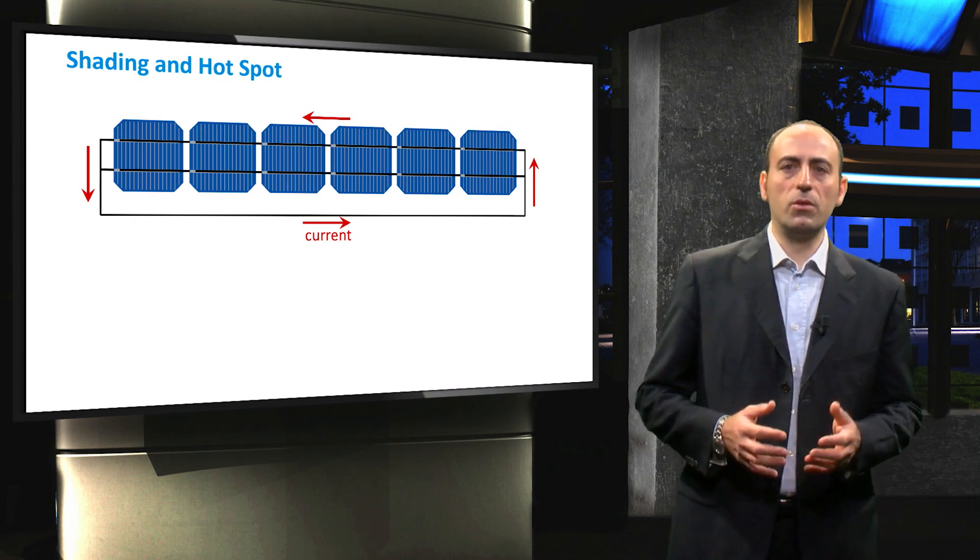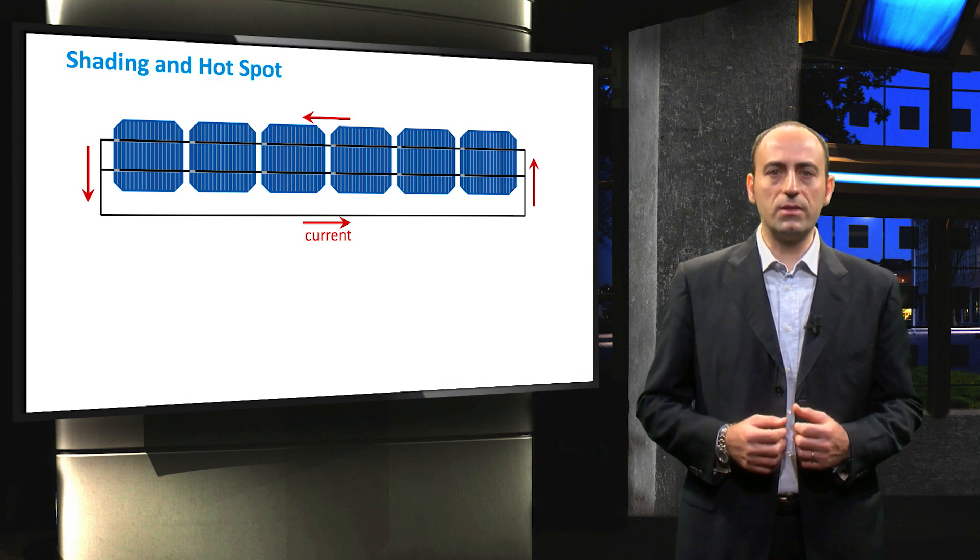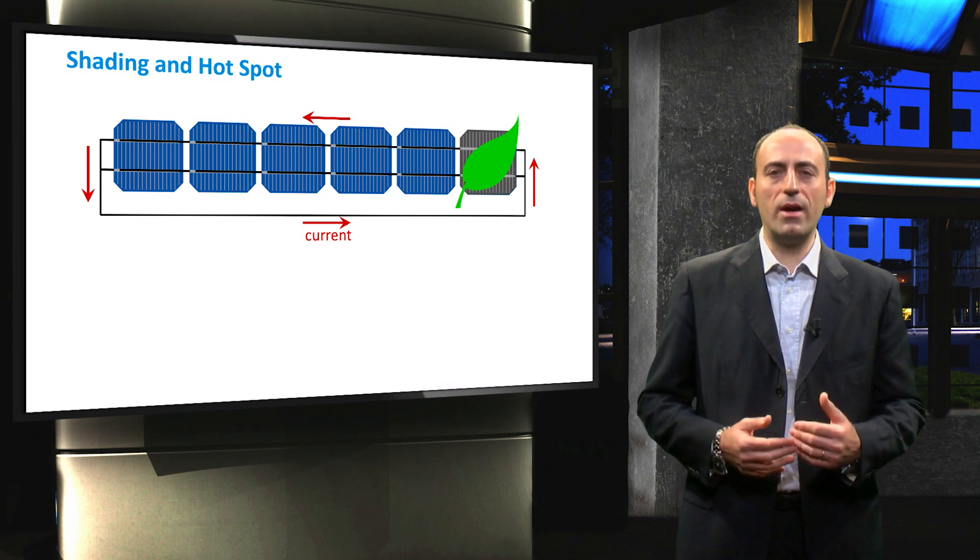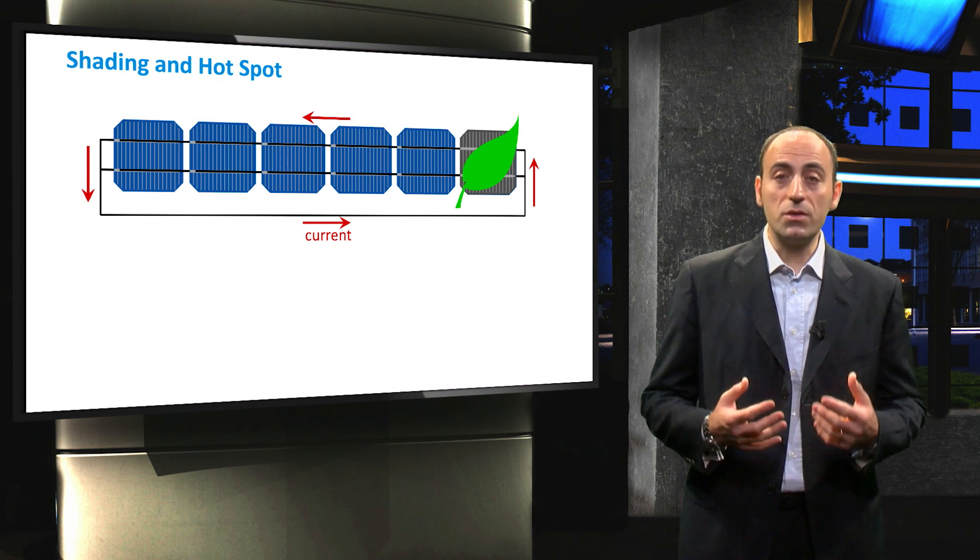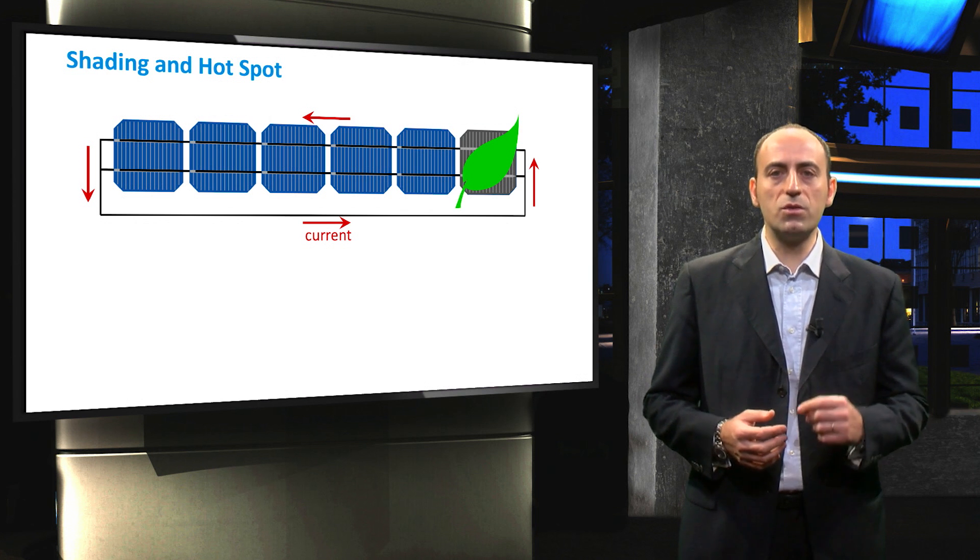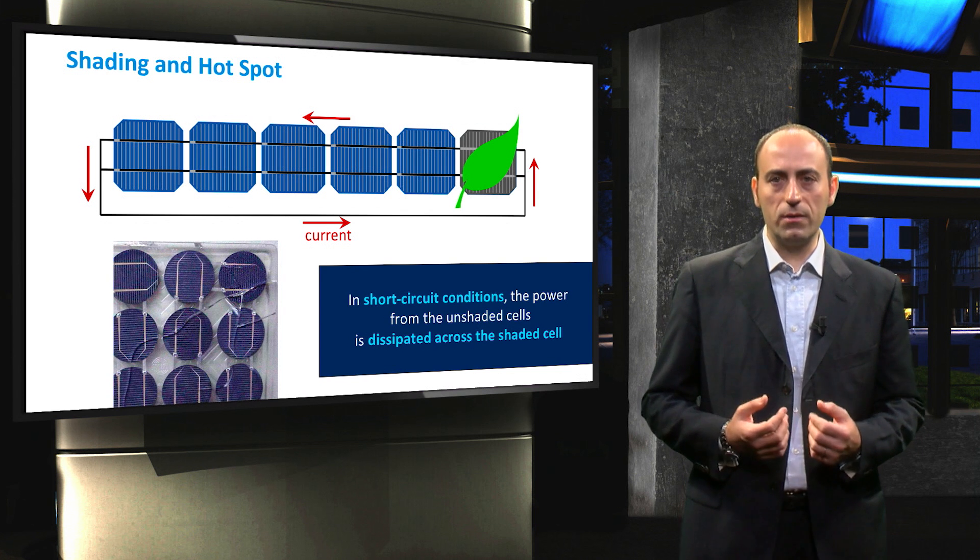An example of hotspot heating may occur when one out of ten series connected cells is completely shaded, causing the good cells to counter-polarize the shaded one. As a consequence, the occurring power dissipation is concentrated on the small area of the shaded cell and it causes a local overheating or hotspot.